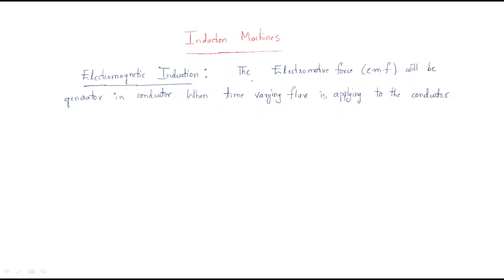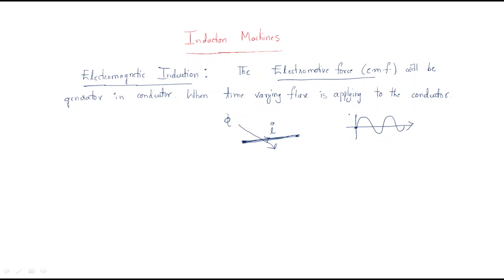What is electromagnetic induction? The electromotive force, or EMF, will be generated in a conductor. A conductor is useful to carry current. When a time-varying flux is applied to the conductor — a time-varying magnetic rotating flux — then EMF will be generated in that conductor. By using this phenomenon, induction machines work.